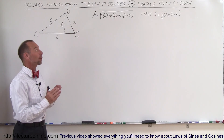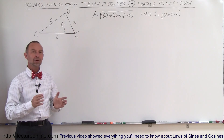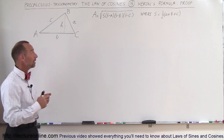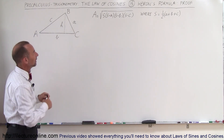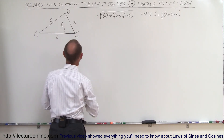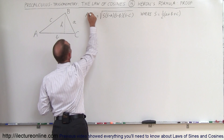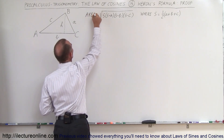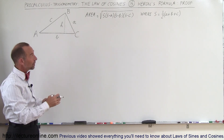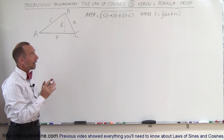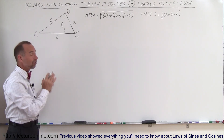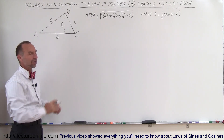Welcome to Electron Online. We're going to prove Heron's formula. The area of a triangle is equal to the square root of s times the quantity s minus a, s minus b, s minus c, where s is half the perimeter of the triangle. So if all you know is the sides a, b, and c, that's the area of the triangle.